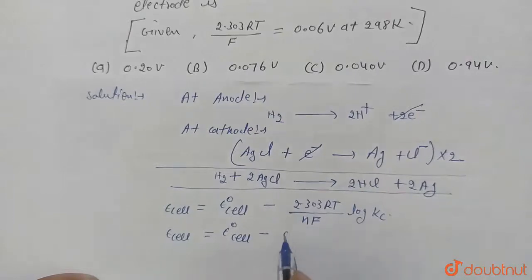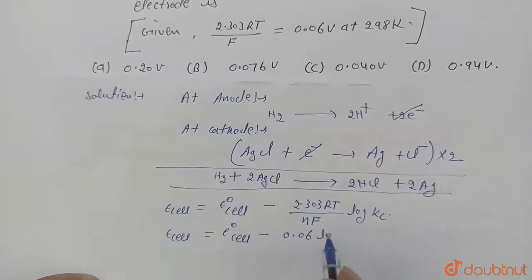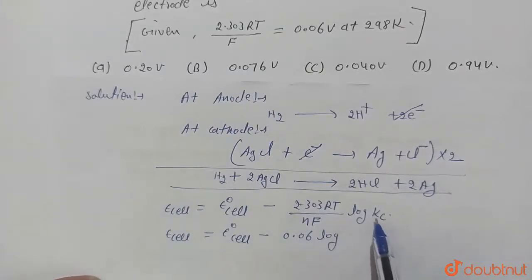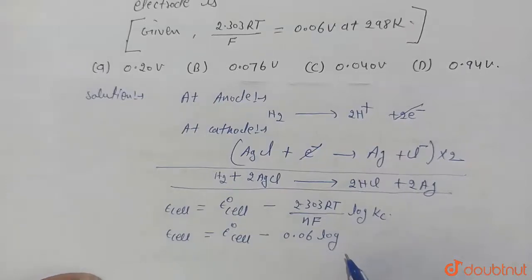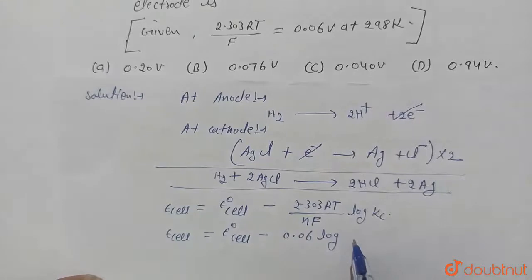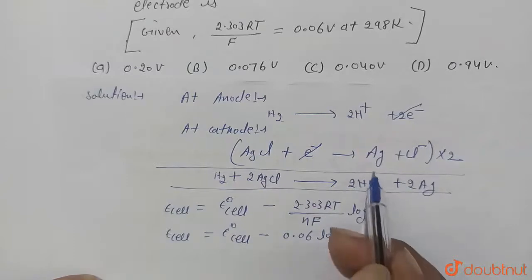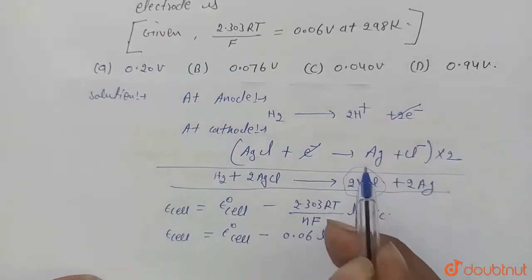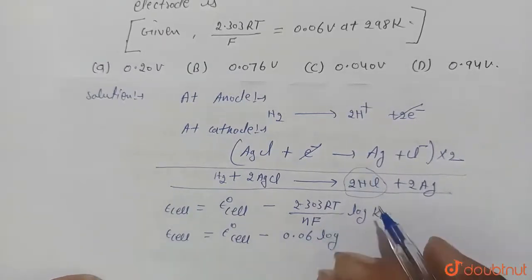Value of Kc will be given. Kc means concentration of HCl solution, and concentration of HCl solution will be given 10 raised to power minus 6.